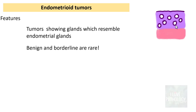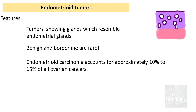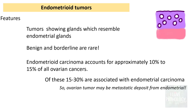While endometrioid tumors have benign, borderline, and malignant categories, the benign and borderline endometrioid tumors of the ovary are extremely rare. Endometrioid carcinoma is the common form and accounts for approximately 10 to 15 percent of all ovarian cancers — that is, 10 to 15 percent of all surface epithelial carcinomas.